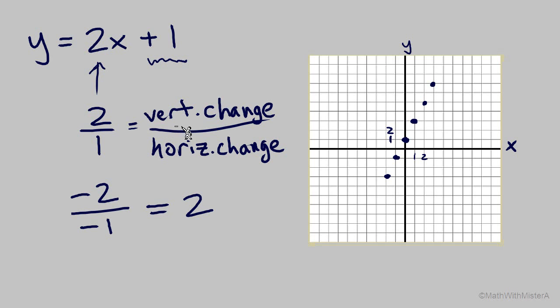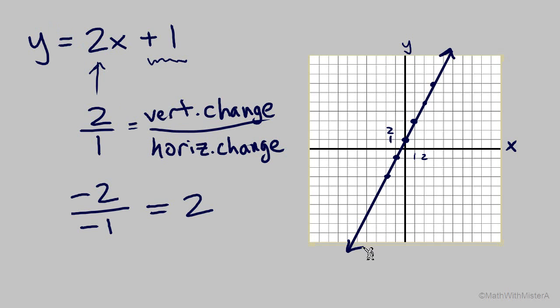Once we see enough points to see where the line will go, we'll connect those points with the line, and now we have that line graphed: y equals 2x plus 1.